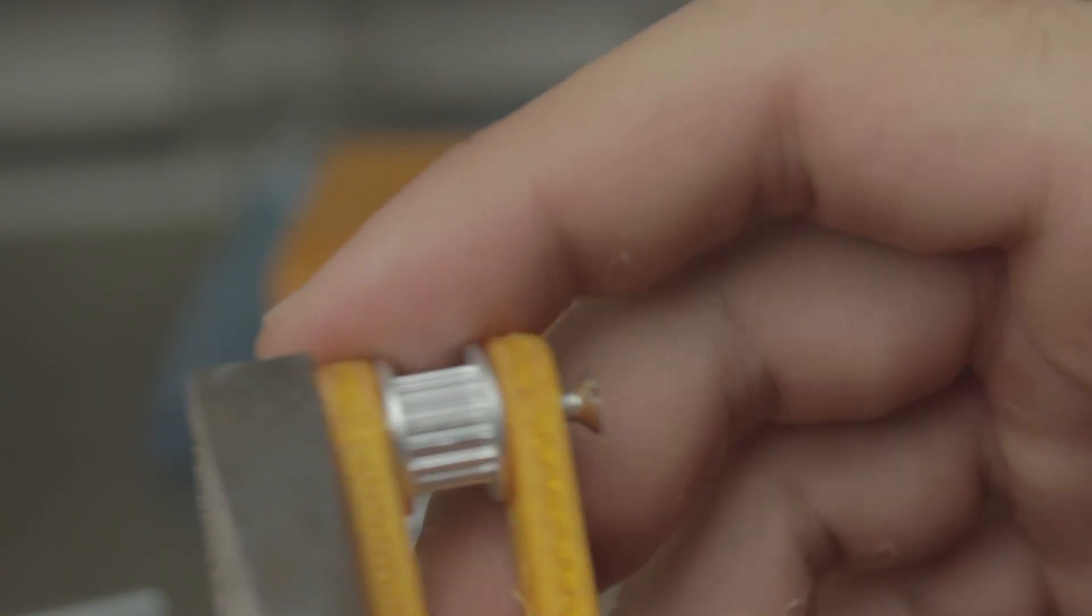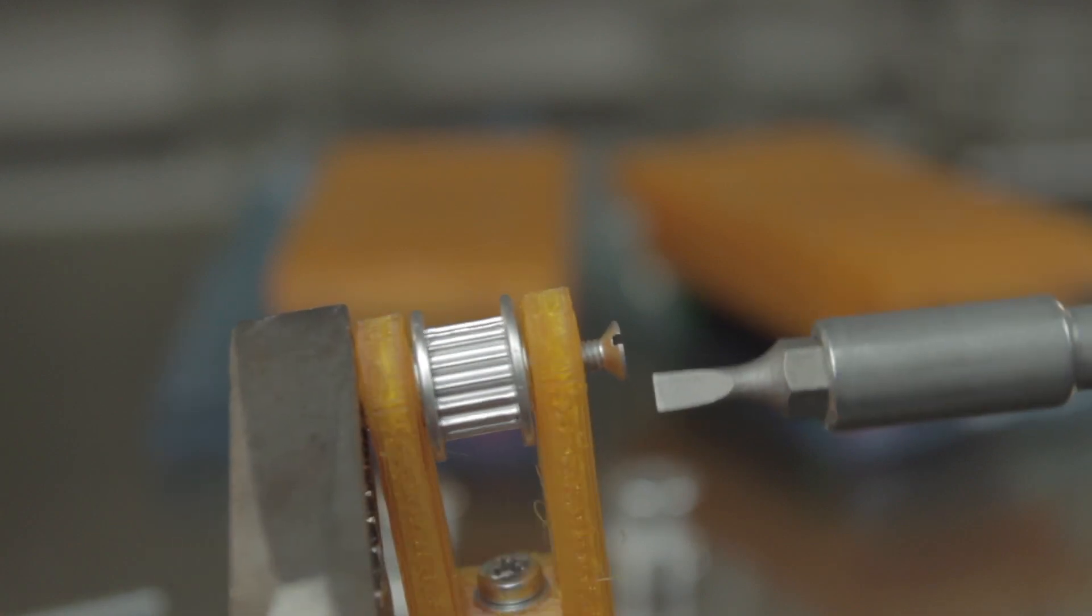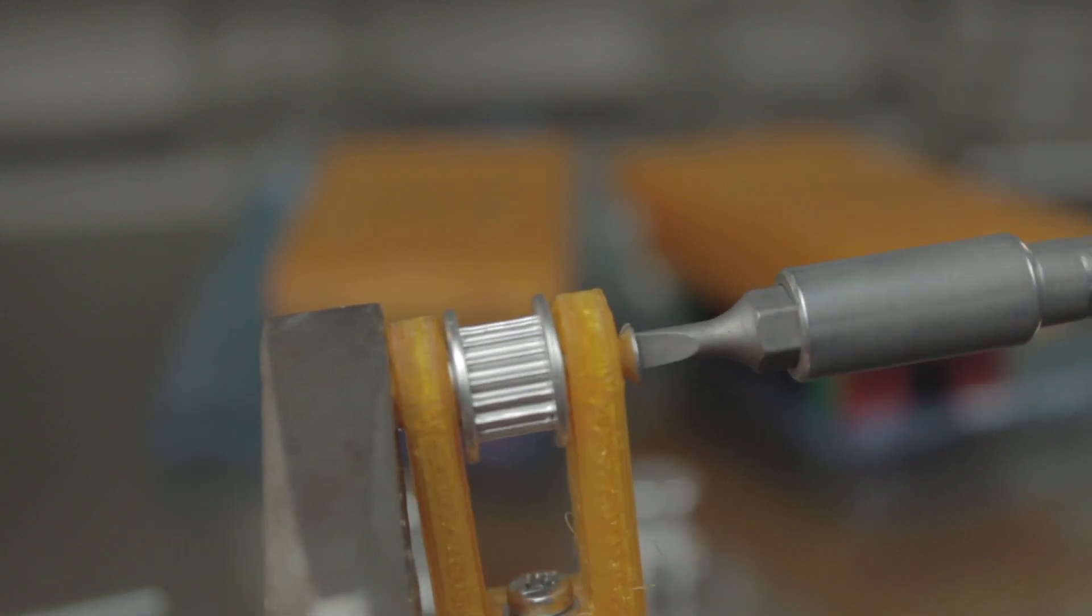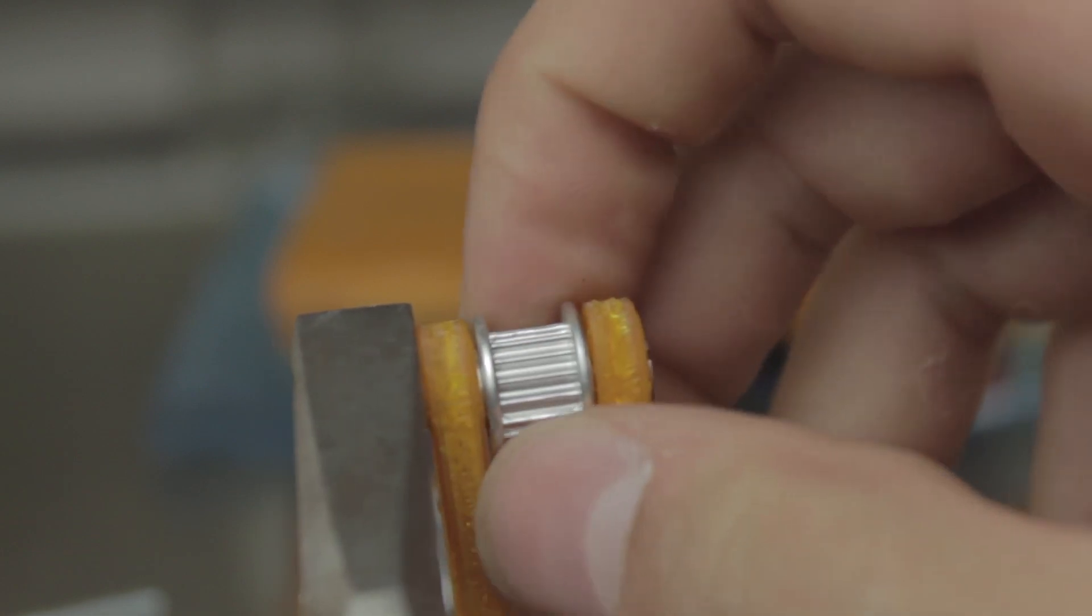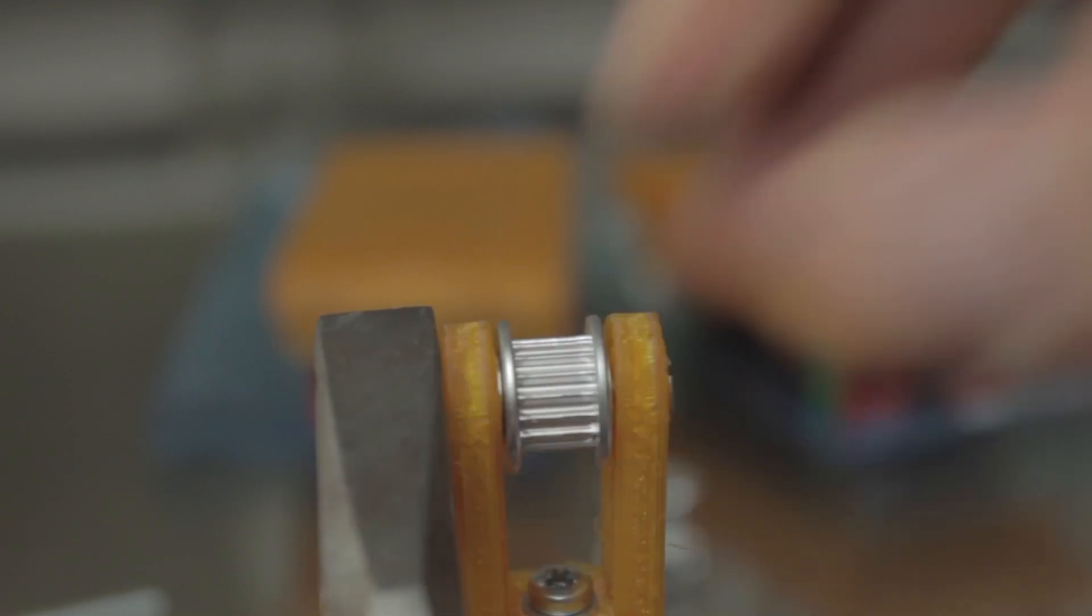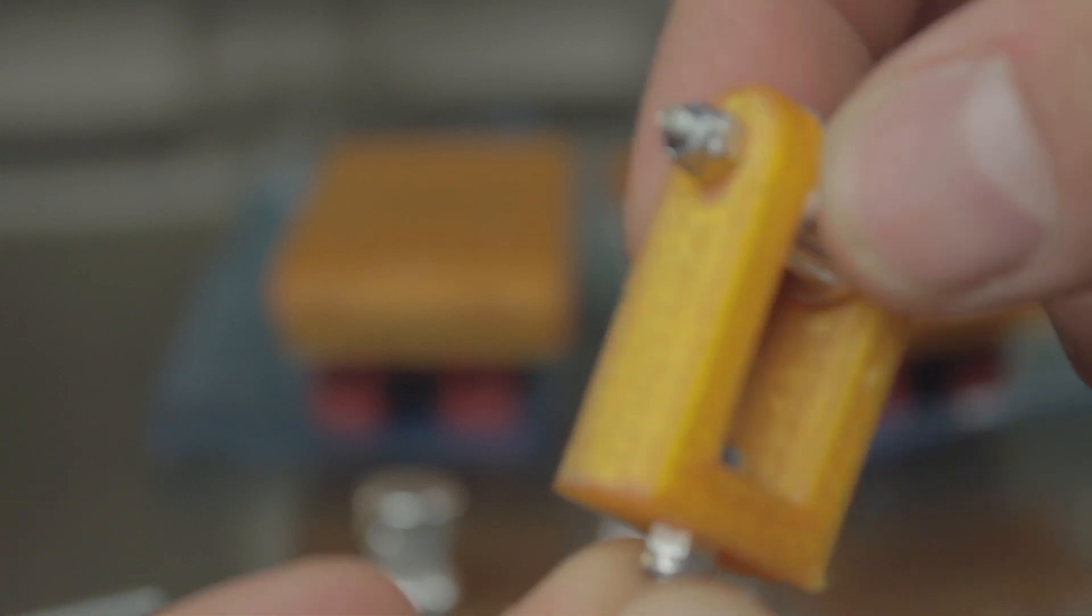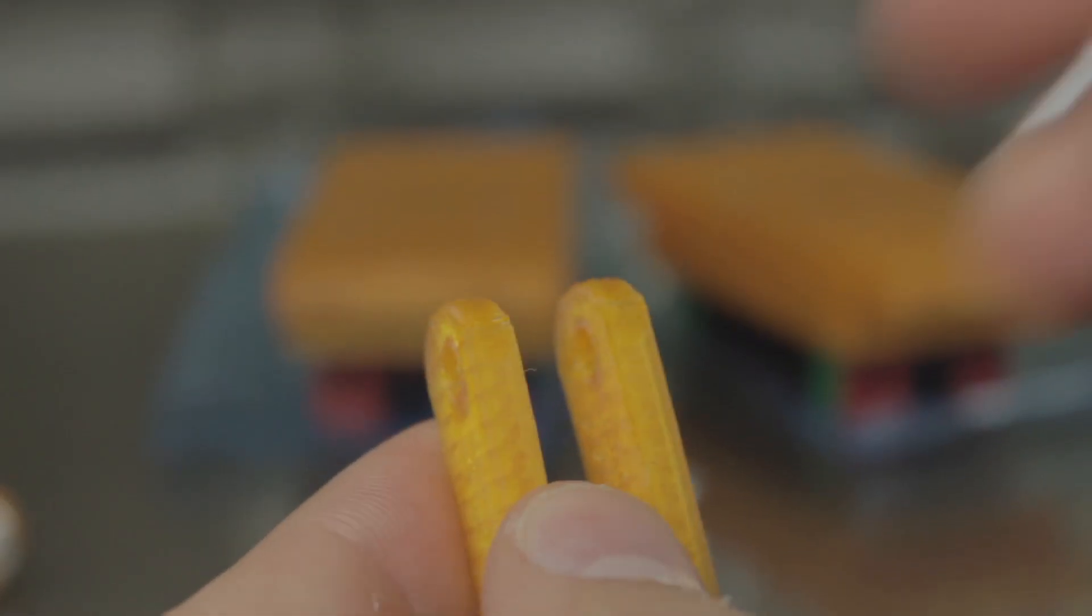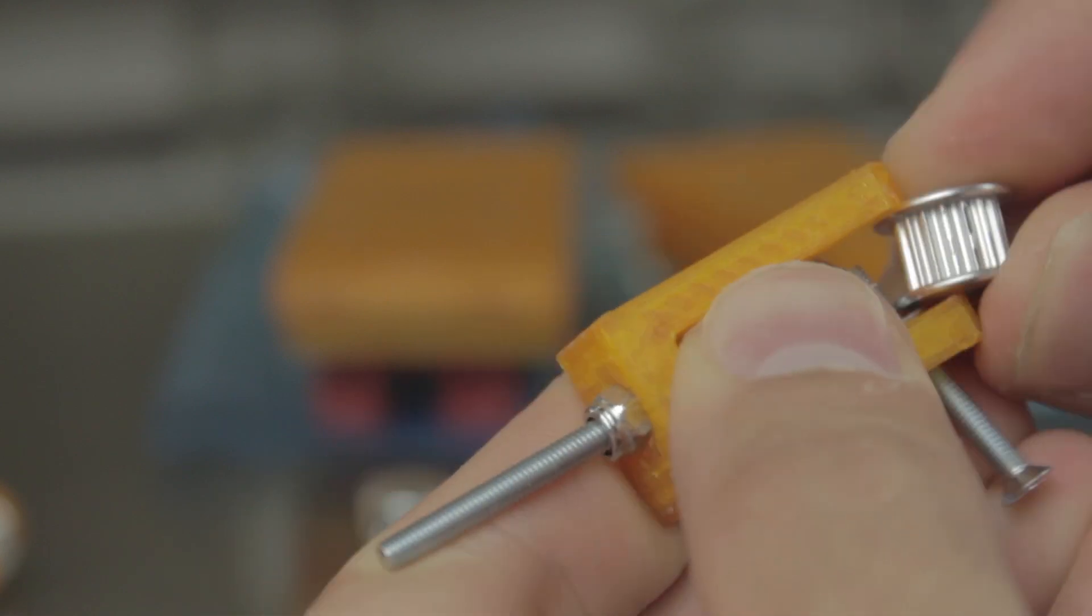Once done, we'll close it with an M3 Nylok nut, as you can see here, tightening everything in place. But remember that the bearing needs to be able to spin, so don't put too much pressure, and yeah, much better.